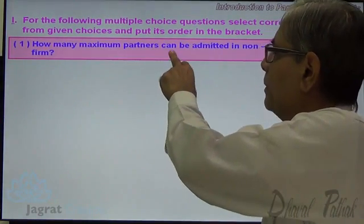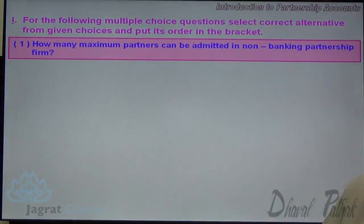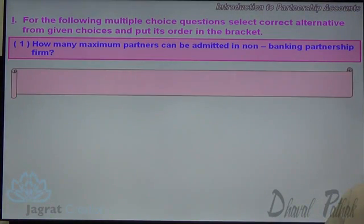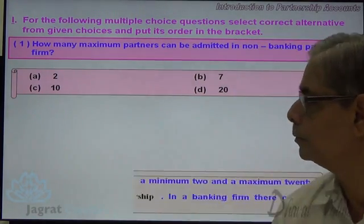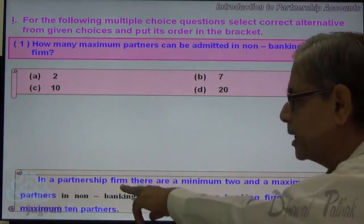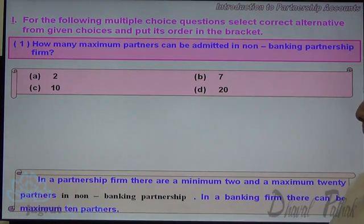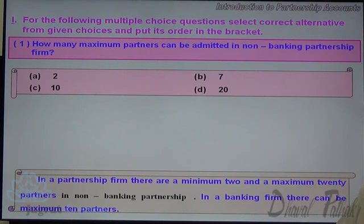How many maximum partners can be admitted in a non-banking partnership firm? The options are 2, 7, 10, and 20. In a partnership firm there can be a minimum of 2 and a maximum of 20 partners in a non-banking partnership. In case of a banking firm there can be a maximum of 10 partners. So the correct answer is 20.